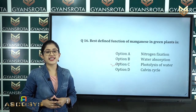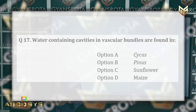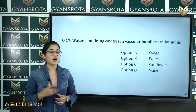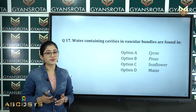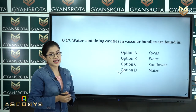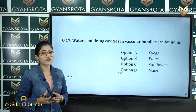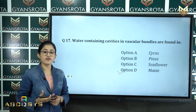Question number 17: Water-containing cavities in vascular bundles are found in — option A Cycas, option B Pinus, option C Sunflower, option D Maize. The correct answer is option D, Maize. We have discussed different types of xylem, phloem, and vascular bundles in the chapter Anatomy of Flowering Plants.